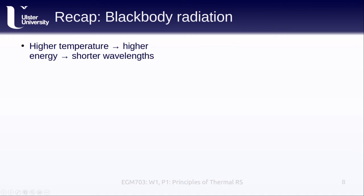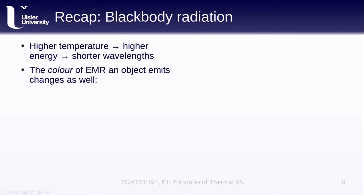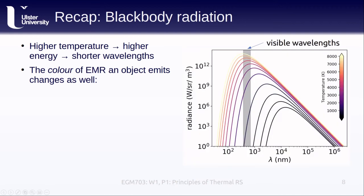Objects with higher temperature have higher energy, and the electromagnetic radiation they emit will have higher frequency or shorter wavelength. This also means that the color of electromagnetic radiation that an object emits changes as well. The plot here shows how an object's radiance — the amount of energy emitted — varies with both wavelength and temperature. Note that this is a semi-logarithmic plot: the steps on the y-axis represent an increase of a thousand, while the x-axis steps go from one hundred to one thousand to ten thousand. Cooler objects have lower overall radiance and emit most at much longer wavelengths. As temperature increases, overall radiance increases, the peak gets higher, and we shift toward lower wavelengths.